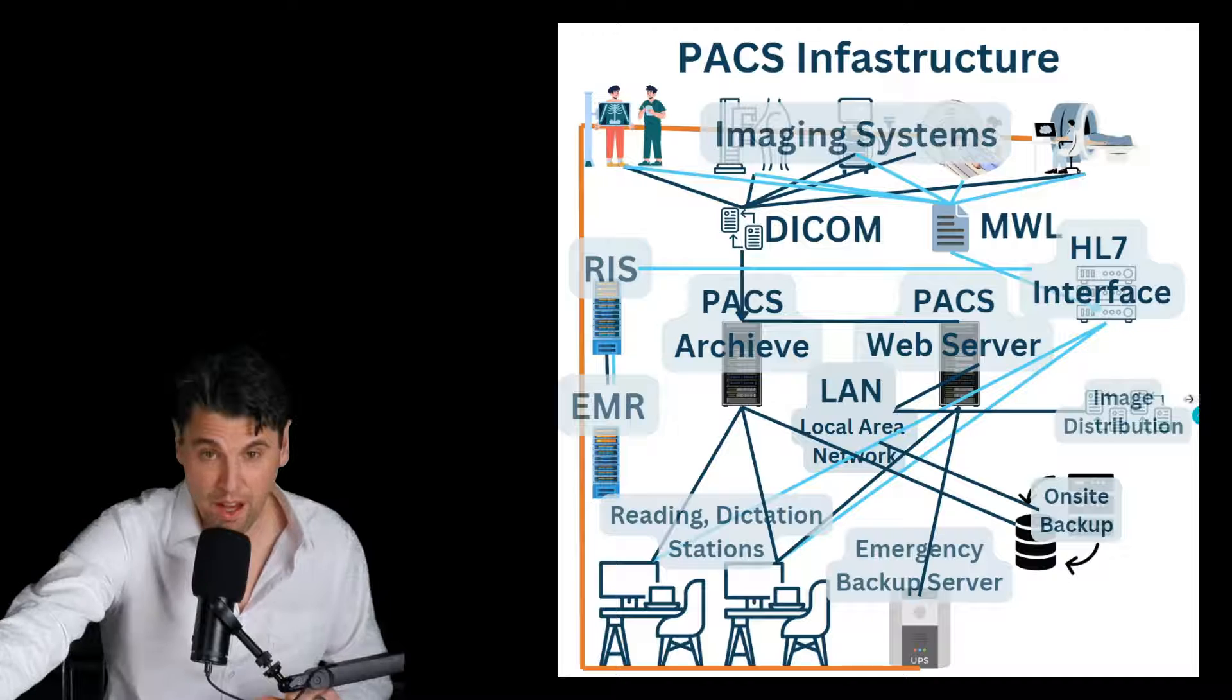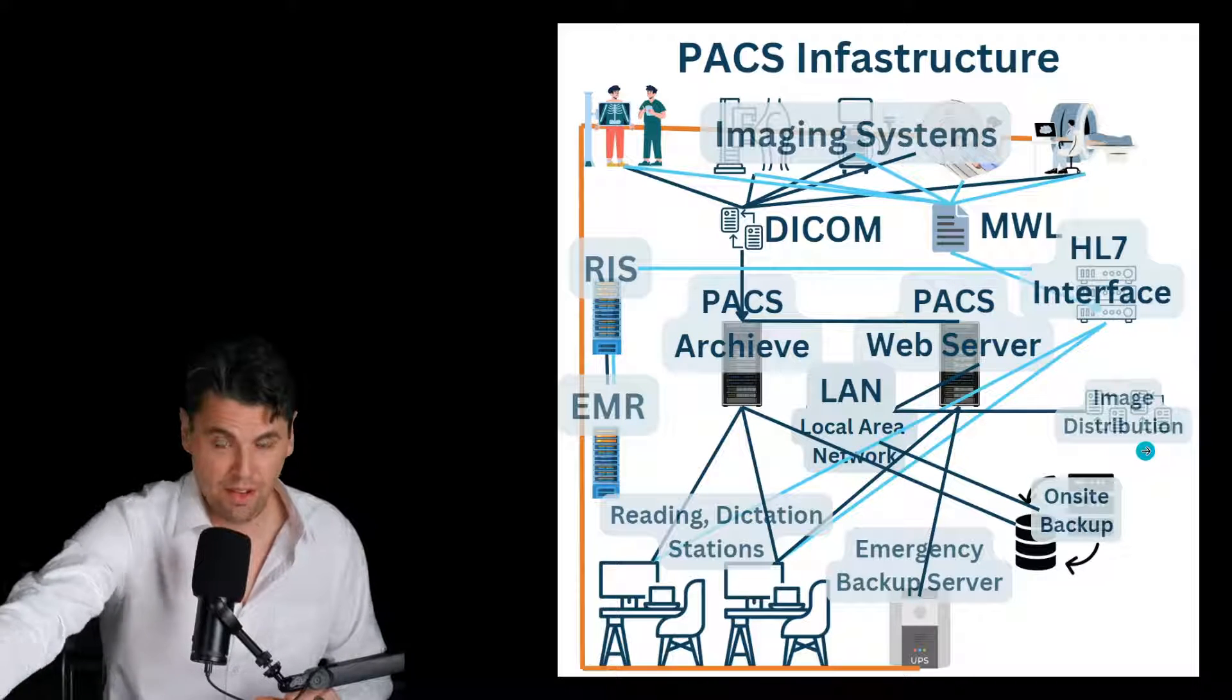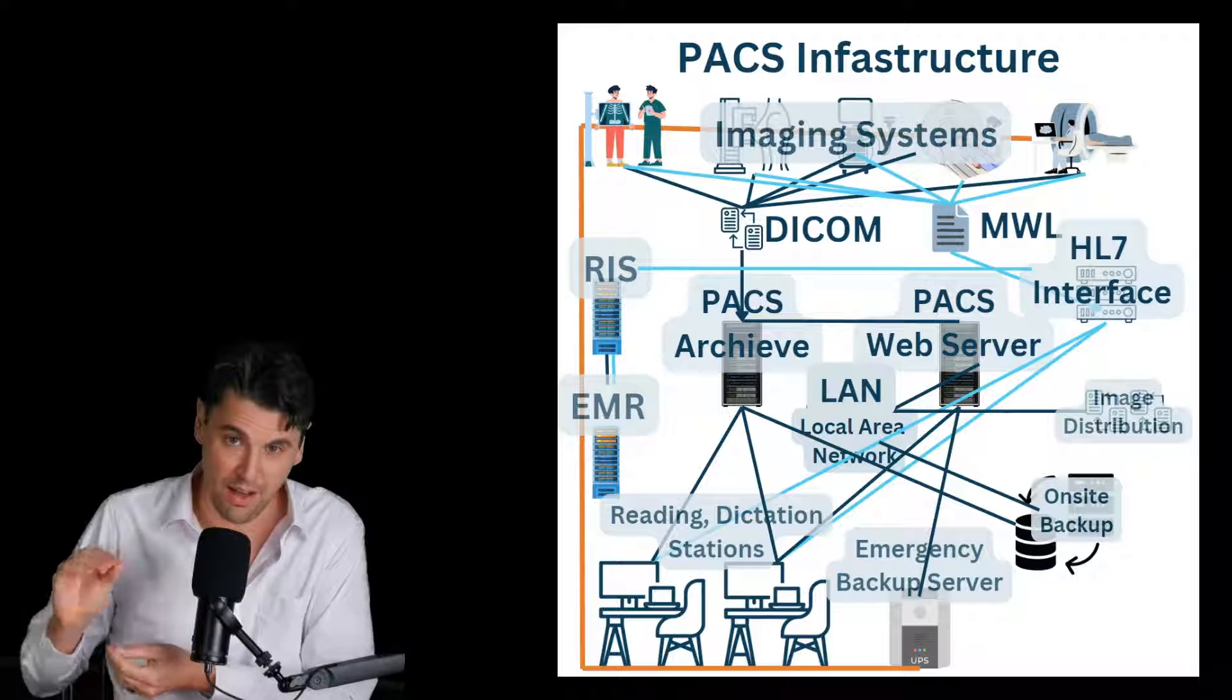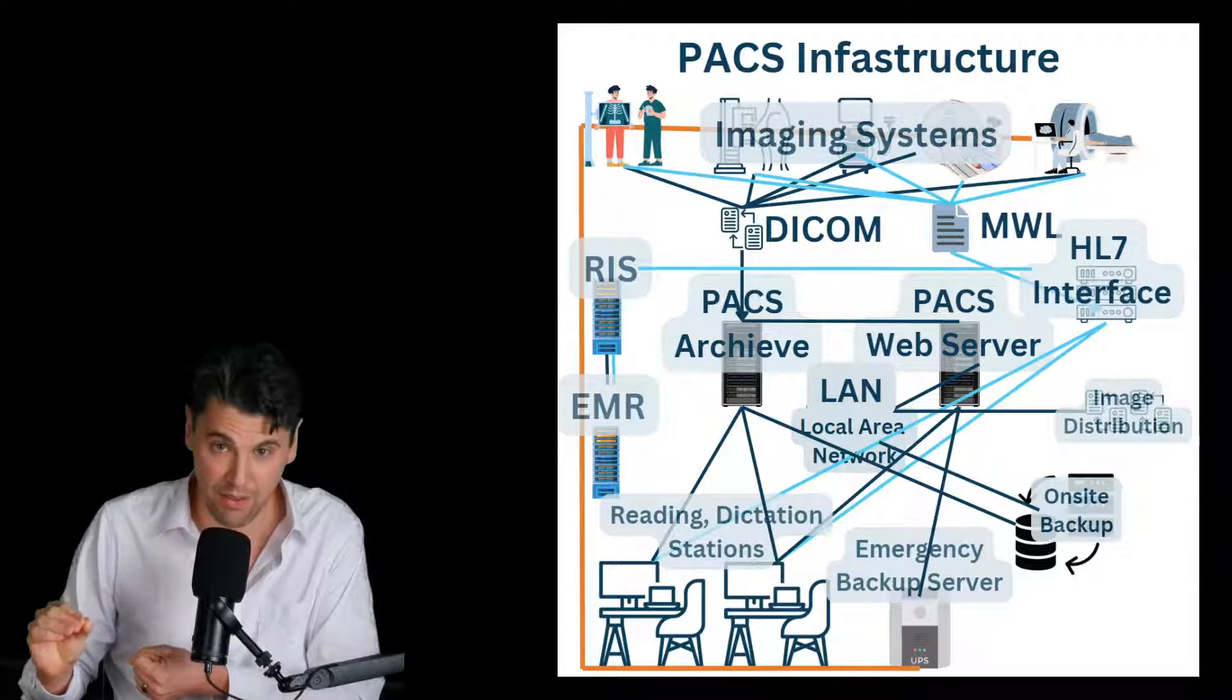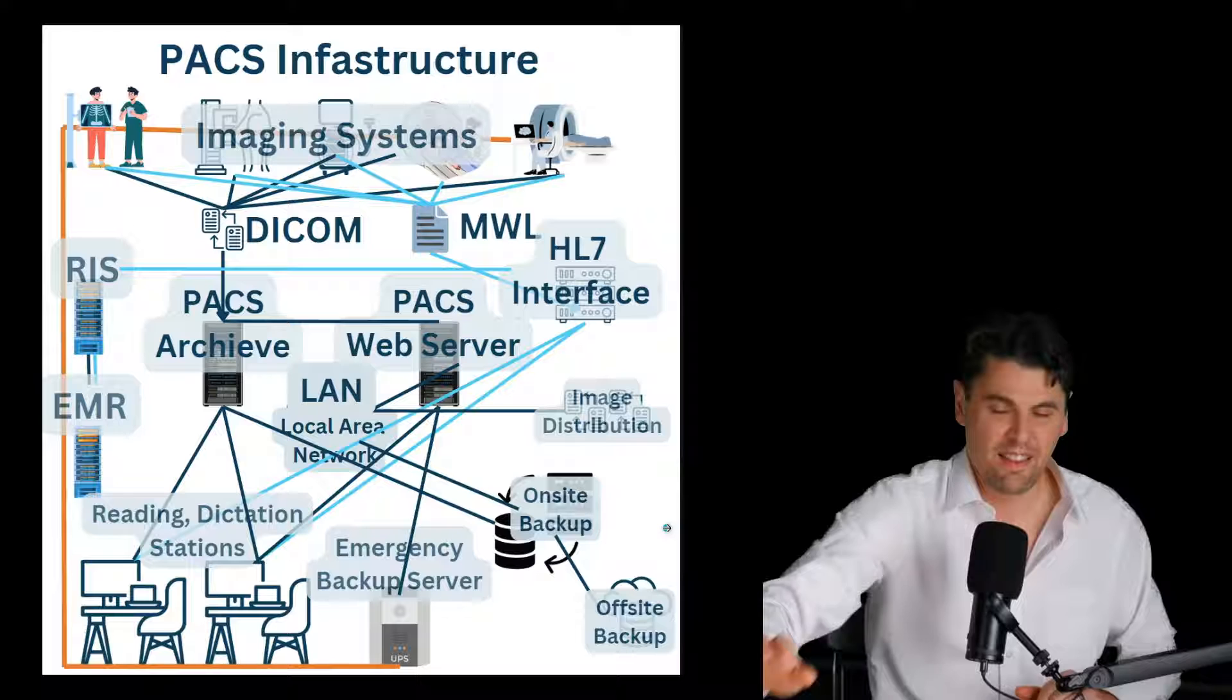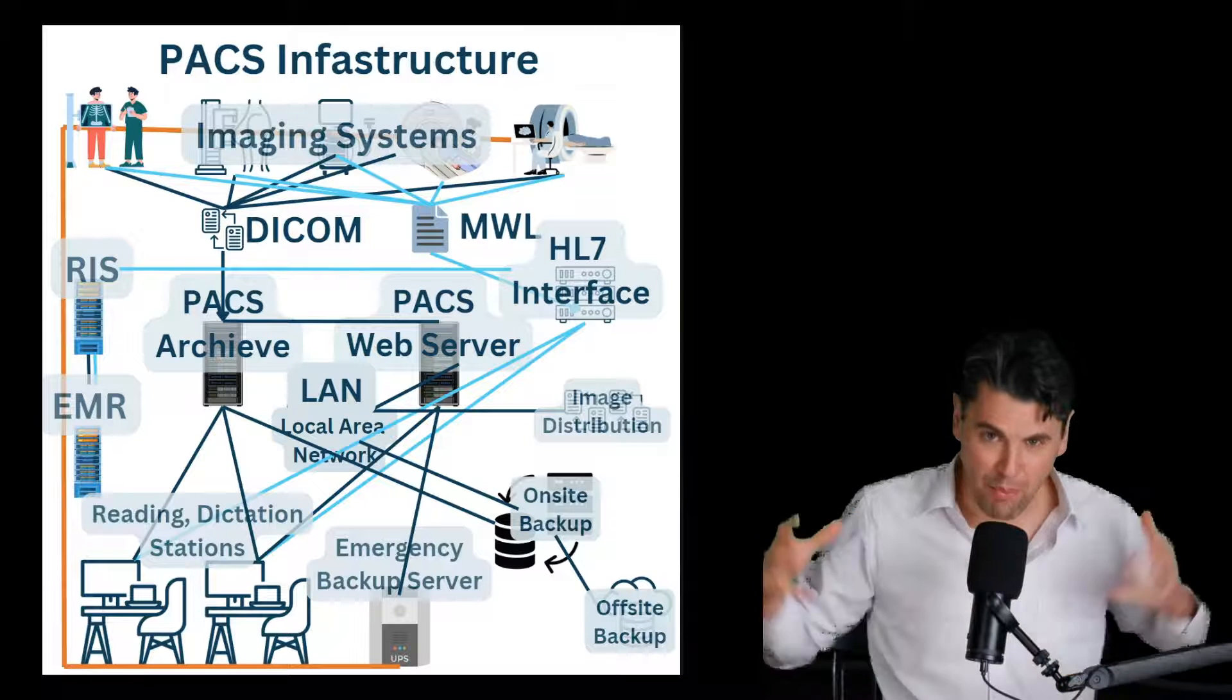The images can also be distributed and accessible via the local area network, such as making physical media copies or making an electronic copy on a physical media. In addition to having an on-site backup, it's also good to have an off-site backup. This is all part of this PACS infrastructure.